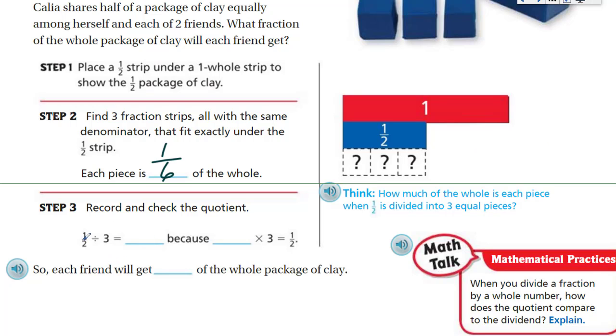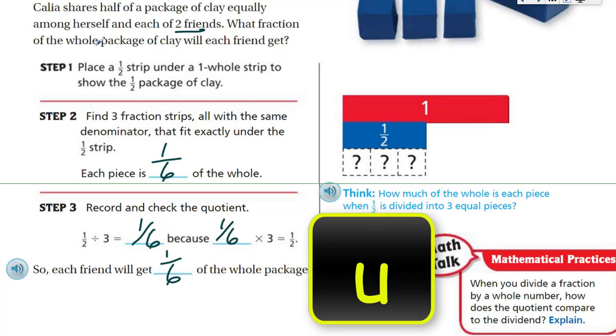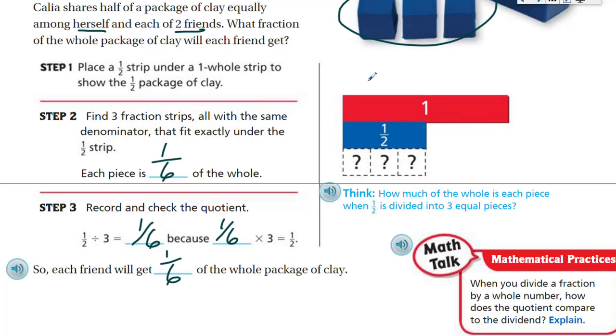Okay. Record and check the quotient. So one-half divided by three will be equal to one-sixth. Because we take the half, and you're breaking this into three equal pieces, which is going to equal one-sixth. One-sixth, one-sixth, one-sixth together would bring us back to one-half. Because one-sixth here times three would equal one-half. So each friend will get one-sixth. Because she was two friends and herself. And that was right there, that half clay. And I like how they did that up here as well. What do we have to think? How much of the whole in each piece when half is divided into three equal pieces?